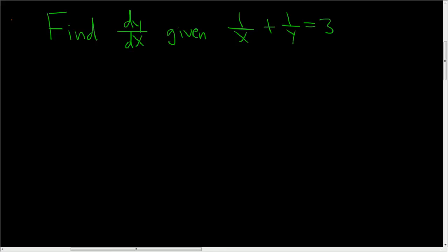We're asked to find dy dx given the following equation. Solution: the first thing to do is get rid of these fractions. There's a 1 here and there's a 1 here, so just rewrite it as follows.